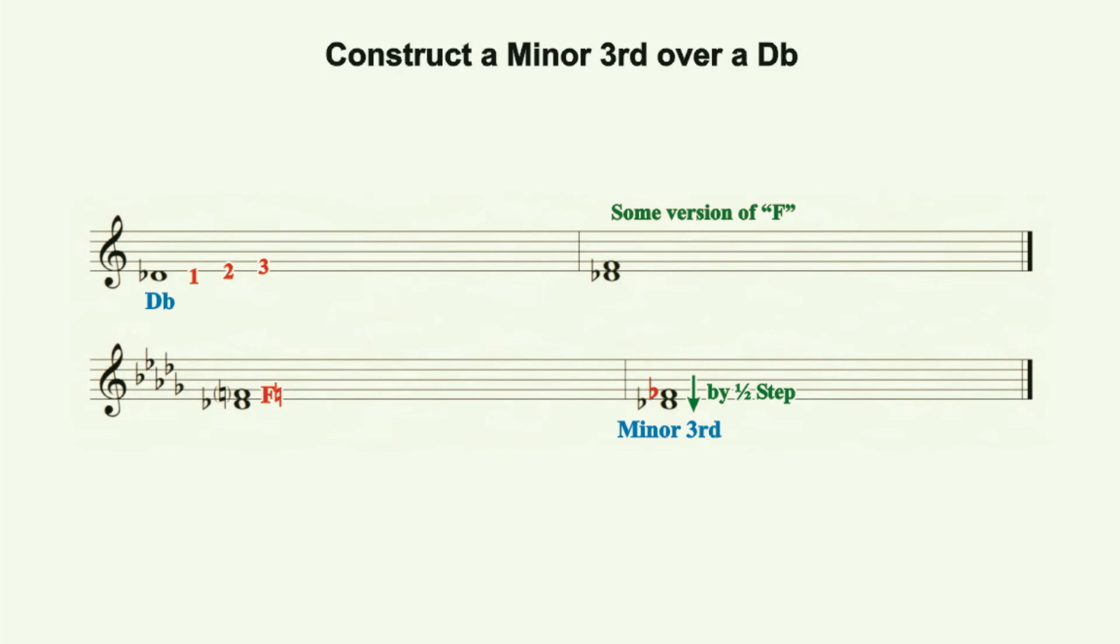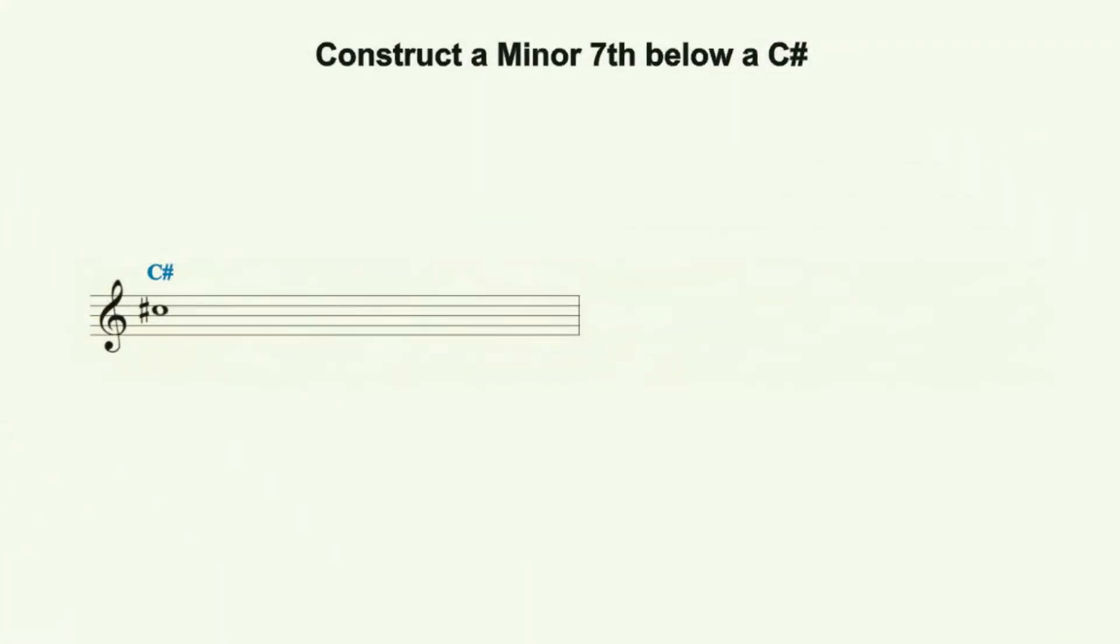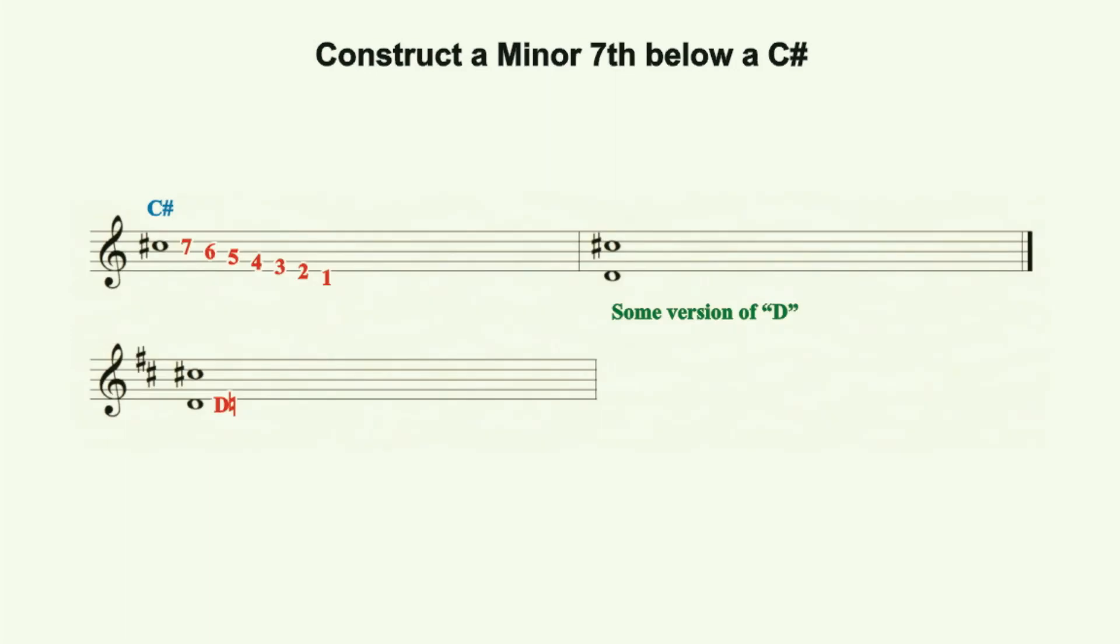Build a minor 7th below a C sharp. Notate the C sharp where desired. Label the C sharp as 7 and count downward through the lines and spaces until you reach 1. The root of our interval will be some sort of D. The key signature for the root of our interval is that for D major, 2 sharps. From the key signature, we determine that the C sharp is already diatonic to the key and that the D occurs as a D natural. The diatonic 7th here would be a major 7th. Since we are looking to create a minor 7th and since the diatonic interval is a major 7th and since the C sharp is diatonic to the key, we can only change the D natural to a D sharp in order to decrease the pitch distance by one half step thereby making our desired minor 7th.